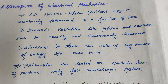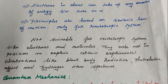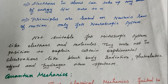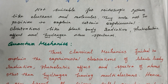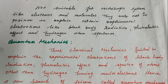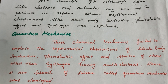Classical mechanics, based on Newton's laws of motion for macroscopic particles, failed to explain experimental observations such as black body radiation, the photoelectric effect, and the hydrogen atom spectrum. Because classical mechanics could not explain these observations, a new branch of science called quantum mechanics was developed.